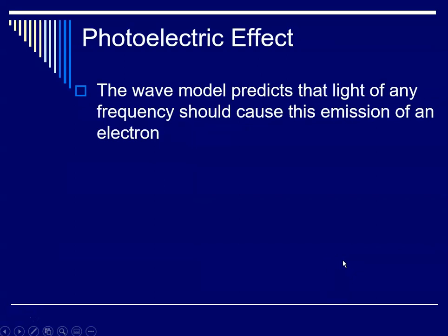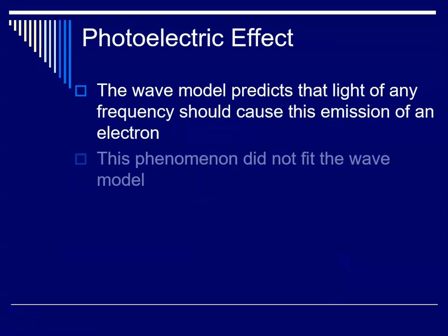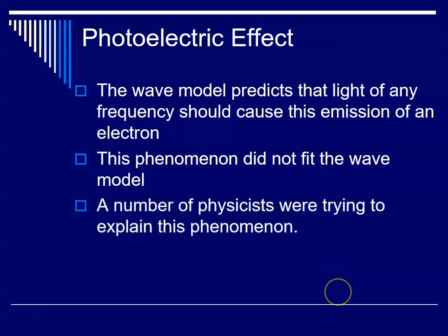So the wave model would predict that light of any frequency should cause the emission of an electron. And this phenomenon that people were seeing, the photoelectric effect, did not fit the wave model of light. So a number of physicists at this time were trying to explain what was going on with the photoelectric effect.